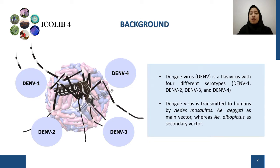The background of our research was about dengue virus. Dengue virus is a blood-borne virus with four different serotypes: DEN-V1, DEN-V2, DEN-V3, and DEN-V4. The dengue virus is transmitted to humans by the Aedes mosquito as the main vector.